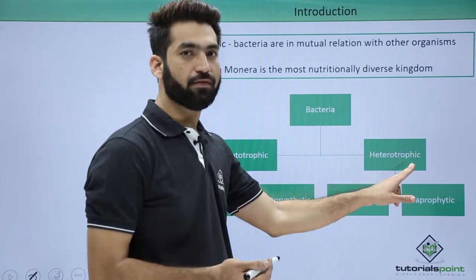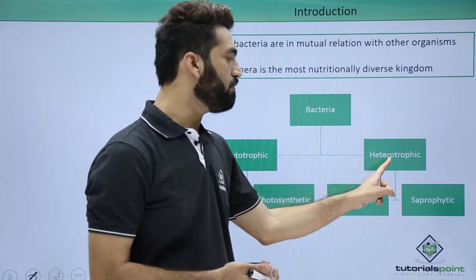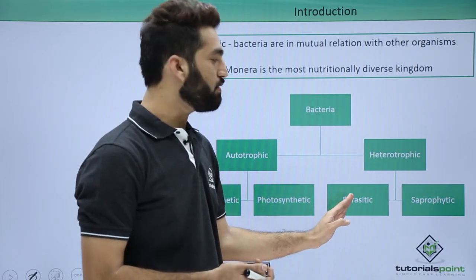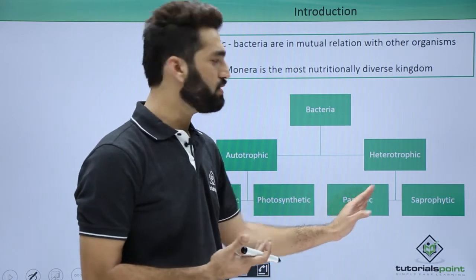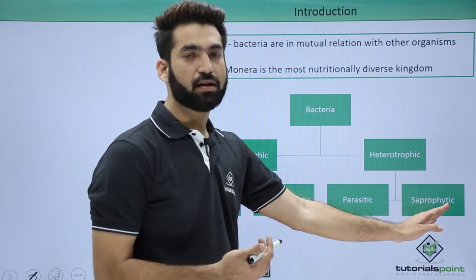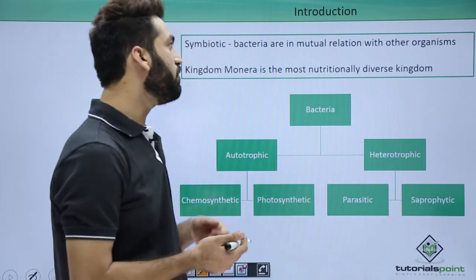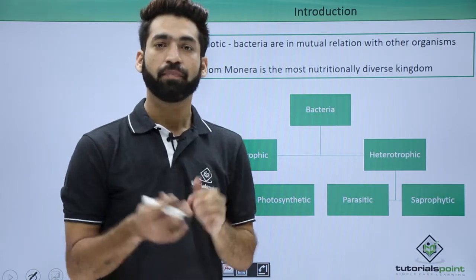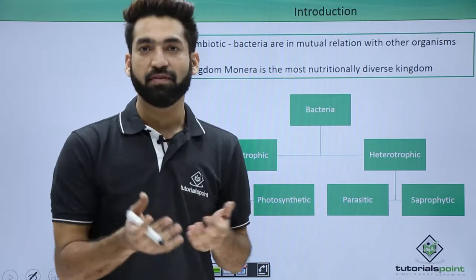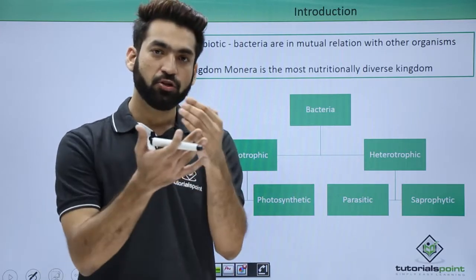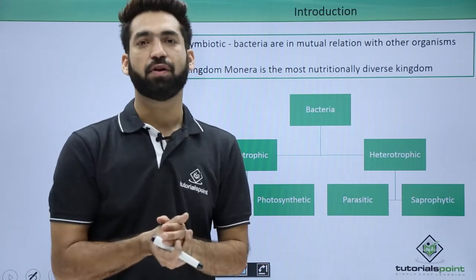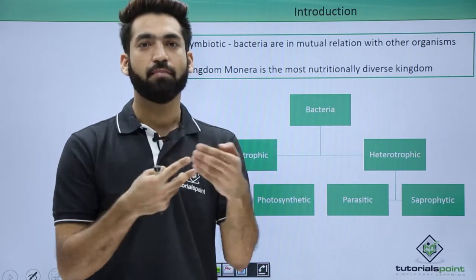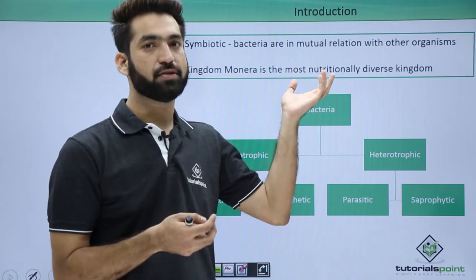Bacteria can also be heterotrophic — 'hetero' means from others, so they depend on other sources for nourishment. These sources can be different: bacteria can be parasitic, depending upon living organisms; saprophytic, depending upon dead organisms; or symbiotic, where bacteria remain associated with plants or other organisms and mutually benefit each other while taking nourishment — 'sym' means together and 'biotic' means life.